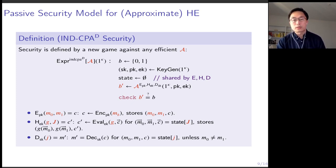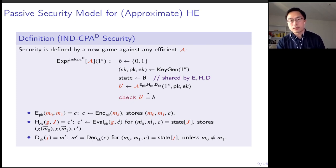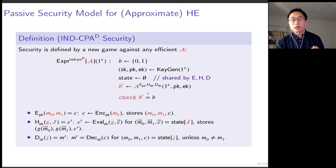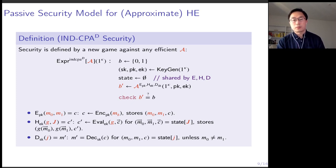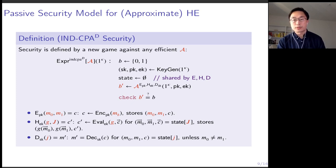The evaluation oracle is also standard. It takes a circuit and a sequence of indices from the adversary, picks the tuples indexed by those indices, homomorphically evaluates the circuit on the indexed ciphertexts, returns the final ciphertext to the adversary, and stores the plaintext computation result in both left and right worlds as well as the final ciphertext into the state. The decryption oracle is very special: it takes only an index from the adversary and picks the corresponding tuple from the state.